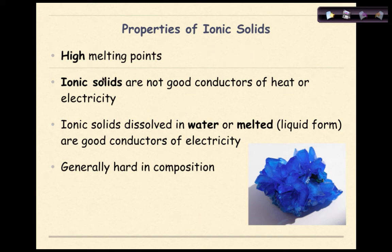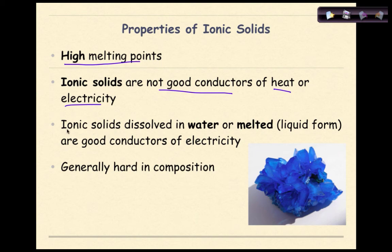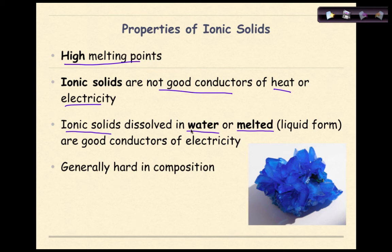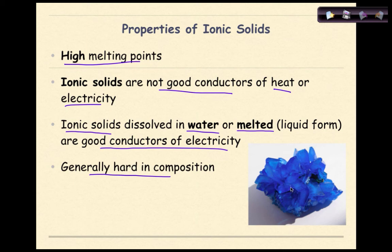Properties of ionic solids: in general, ionic solids have high melting points. They are not good conductors of heat or electricity as solids because the ions can't move, so electrons can't move either. Most ionic solids dissolve in water to some degree — in Regents chemistry we describe compounds as soluble or insoluble. If dissolved in water or melted, ionic solids are good conductors of electricity. Ionic solids are generally hard in composition.